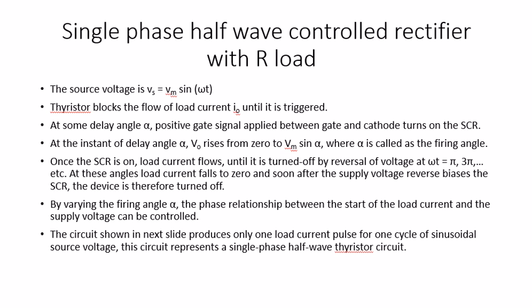Single phase half wave control rectifier with R-load: the source voltage is Vs, equal to Vm sin(ωt). The thyristor blocks the flow of load current IO until it is triggered. When the trigger option is applied, the thyristor will open, the current will not be blocked and will flow, forming the half wave control rectifier waveform. At delay angle alpha, a positive gate signal applied between the gate and cathode turns on the SCR, and V0 rises from zero to Vm sin(ωt). Alpha is also called the firing angle.